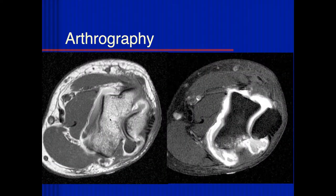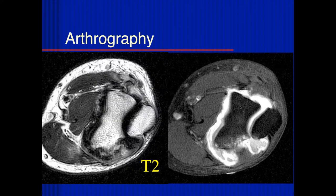This shows an arthrogram. We rarely do arthrography of the elbow, and in my experience I would rarely do arthrography just about anywhere. Occasionally we'll do MR arthrograms of the elbow — maybe you can see the articular cartilage a little bit better — but one of the problems is that if the contrast is too concentrated, then the T2-weighted images aren't very useful.